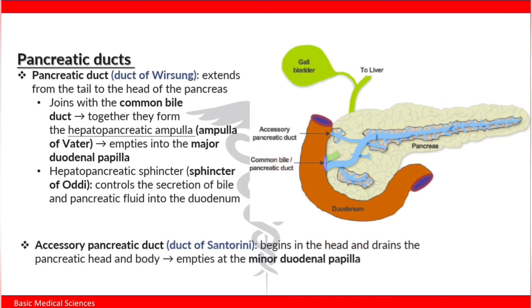The distal segment of the tail is intraperitoneal. The pancreatic duct extends from the tail to the head of the pancreas.